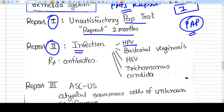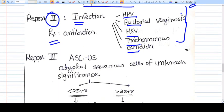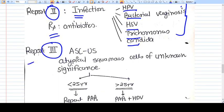Report number two suggests infection: HPV, bacterial vaginosis, HSV, Trichomonas, Candida. These kinds of infections can be diagnosed. What we do is prescribe antibiotics and antivirals.